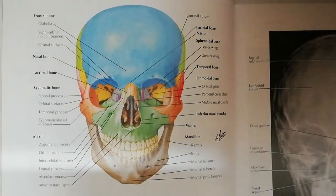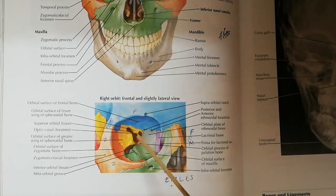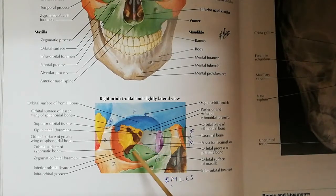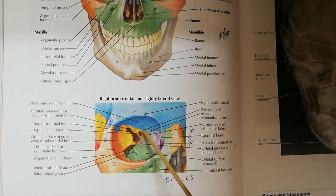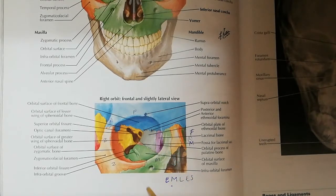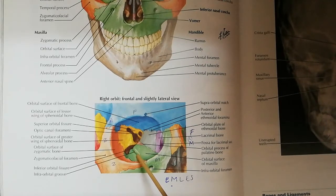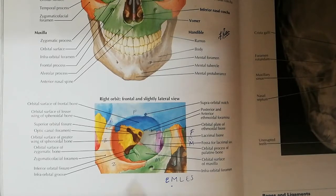Now let's see the orbital cavity. In the orbital cavity we have the superior orbital fissure, the inferior orbital fissure, the optic canal, and the posterior and anterior ethmoidal foramina. This is the infraorbital groove, where the infraorbital nerves and vessels pass before they come out of the infraorbital foramen.